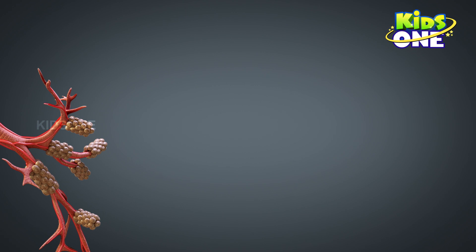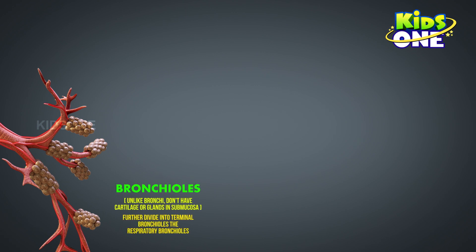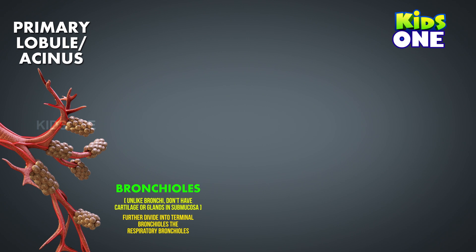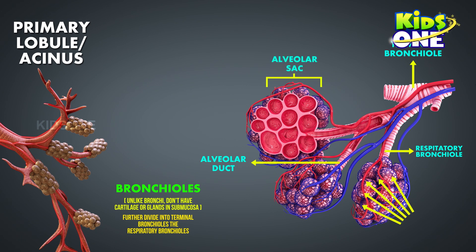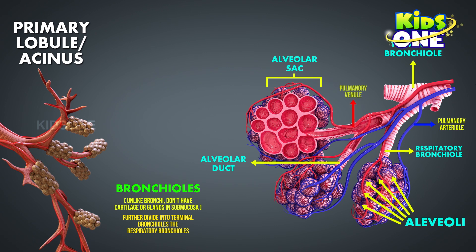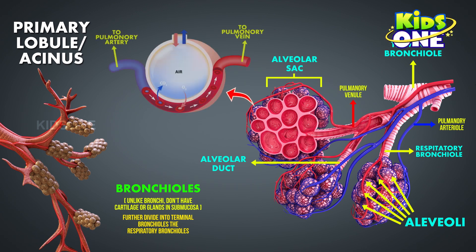The bronchi branch into the bronchioles. The primary lobule, otherwise called the acinus, is the functional unit of the lung. It is composed of a single terminal bronchiole, numerous respiratory bronchioles, alveolar ducts, alveolar sacs, and around 10,000 alveoli. The pulmonary blood is delivered to it by a pulmonary arteriole and taken away by a pulmonary venule. The alveoli are where gaseous exchange takes place, and their thin membranes form a blood-air barrier.